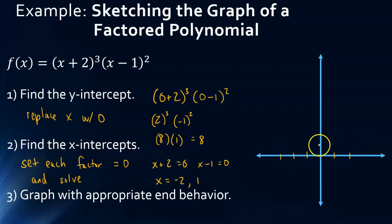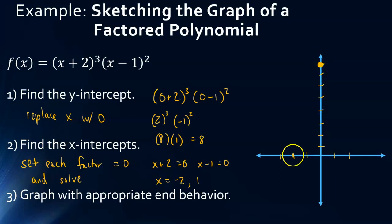The y-intercept is at 8. We plot the point where we'd have a y-intercept of 8, an x-intercept of negative 2, and an x-intercept at 1. And then the end behavior — we're going to graph it with the appropriate end behavior.